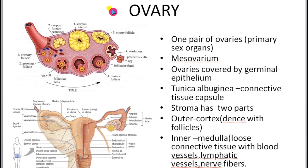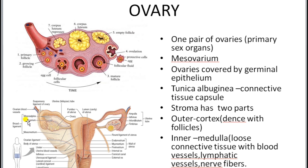One pair of ovaries are present in the lower abdominal region. These ovaries are approximately 2 to 3 centimeters long. The ovary is attached to the abdominal wall by a double-layered peritoneal membrane which is transparent, known as the mesovarium.